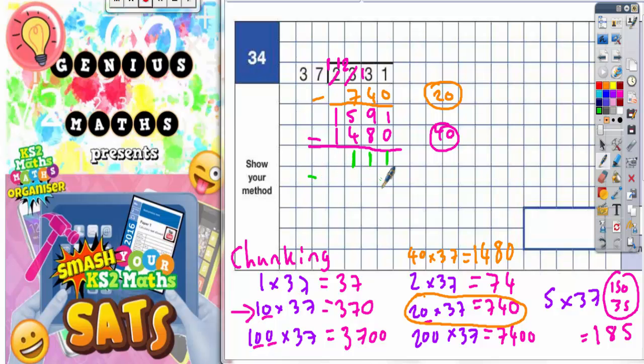Now we need to figure out what we can take off. The next big chunk we can take off is 74, which is 2 times 37. Let's take off 74 and write 2 at the side. 1 take 4 we can't do, so borrow: 11 take away 4 is 7. Nothing take away 7 we can't do, so borrow: 10 take away 7 is 3. We're down to 37.